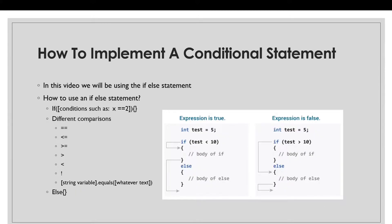So how do you implement a conditional statement? Like I said, in this video we'll be using the if-else statement. So you put in the if keyword, then the parentheses, and inside the parentheses you put in whatever condition you want. It's mostly the equal, greater than, less than, greater than or equal to, less than or equal to, or not equal, not greater than, or not less than — to compare a variable to a value or variable to a variable.